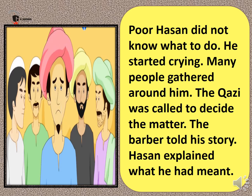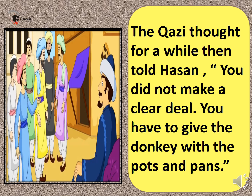Hassan did not know what to do. He started crying and many people gathered around him. A Kazi — meaning a judge, a person who solves the problems of others — was called to decide the matter. Both the barber and Hassan explained the story their own way. The Kazi thought for a while and told Hassan, 'You did not make a clear deal, so you must give the donkey along with the pots and pans to the barber.'